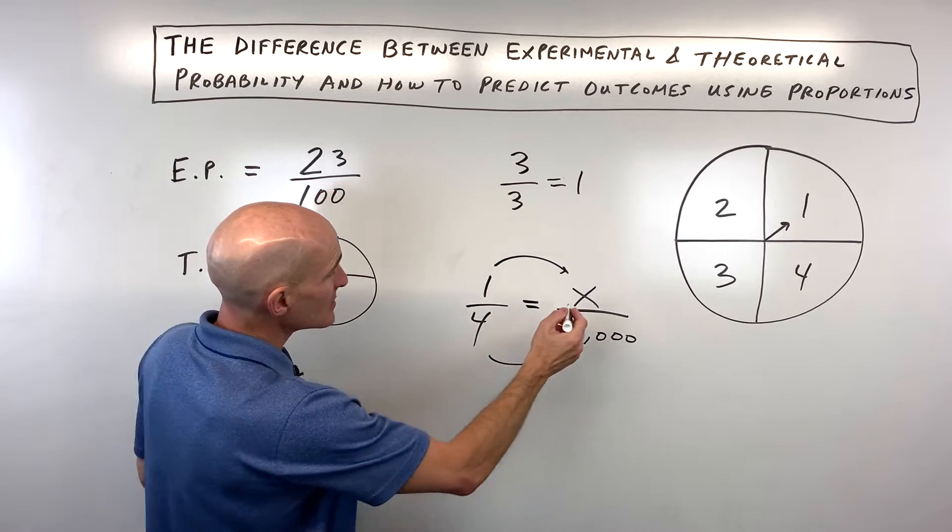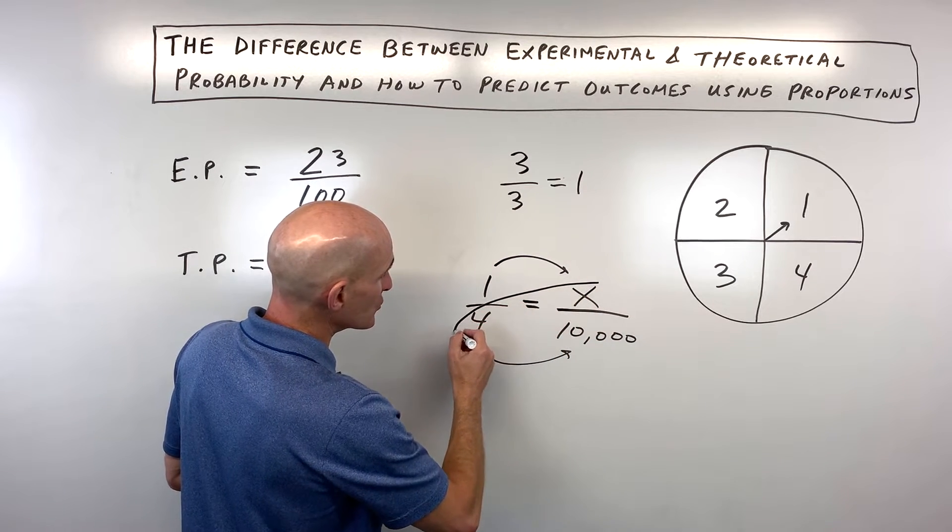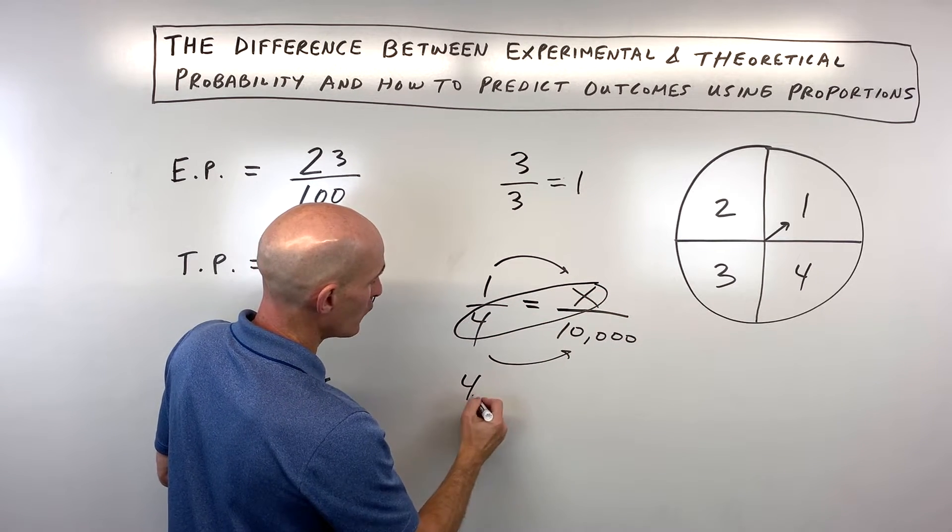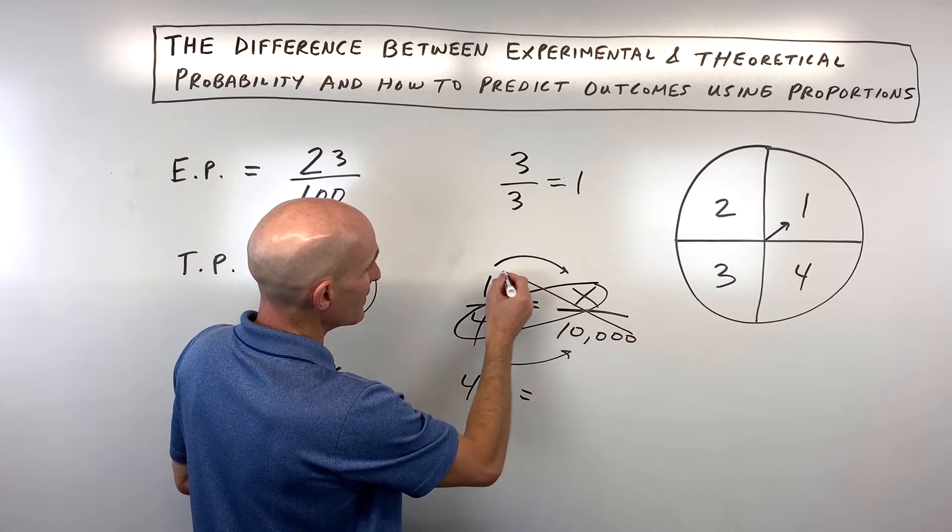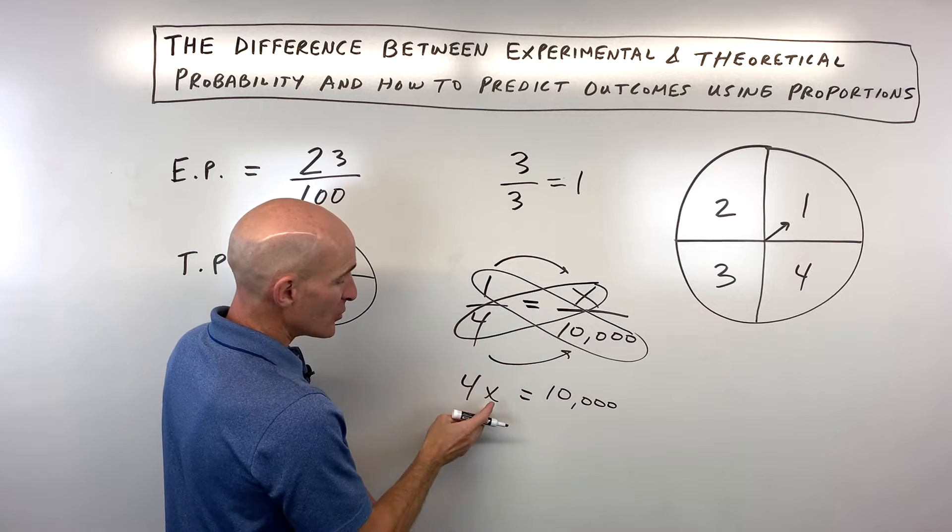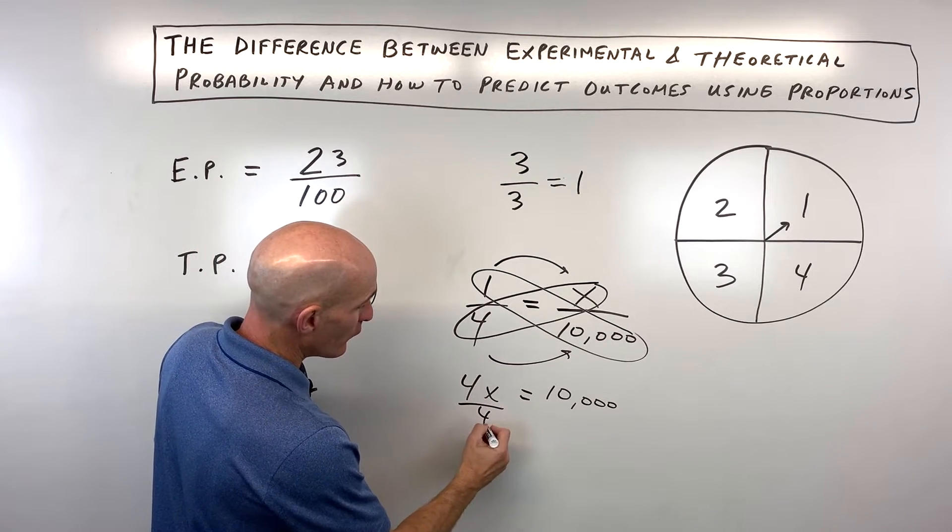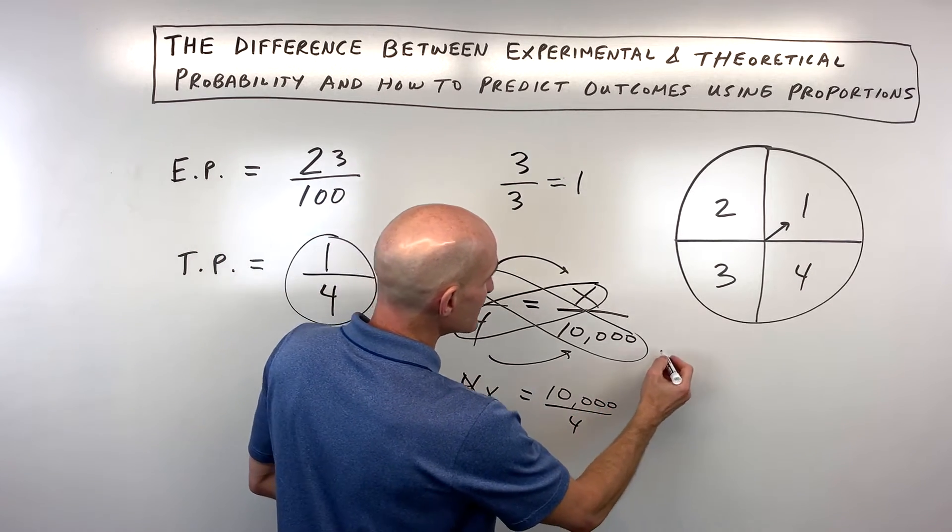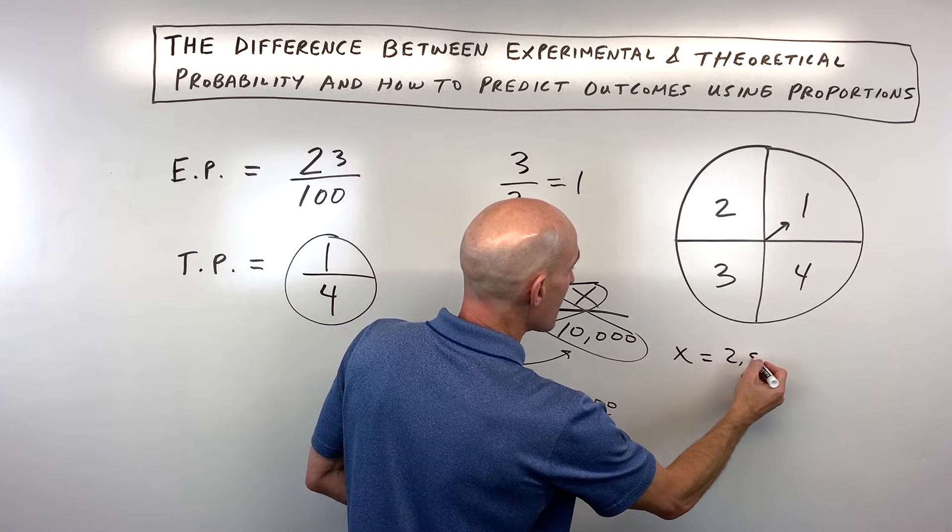Another way that students sometimes like is to do the cross product. So you would multiply in the diagonal, you'd say four times x is 4x is equal to 10,000 times one, which is 10,000. And then you can solve for x by dividing by four. And so you can see x is coming out to 2500.